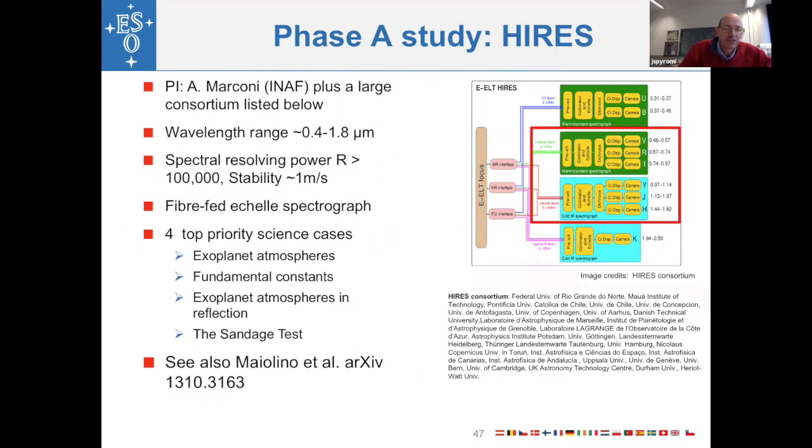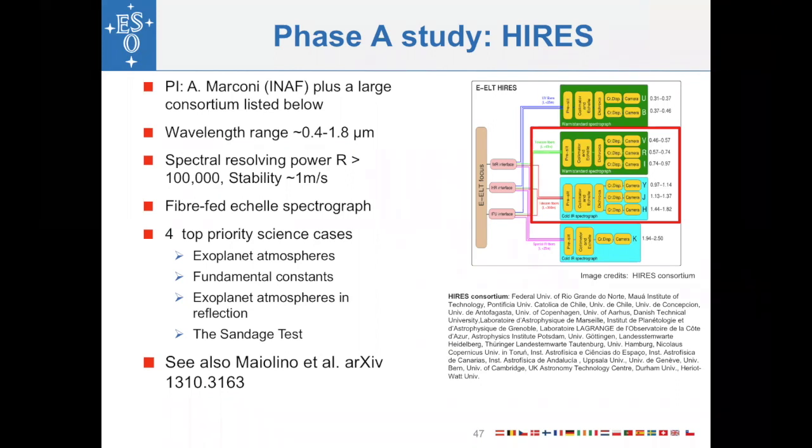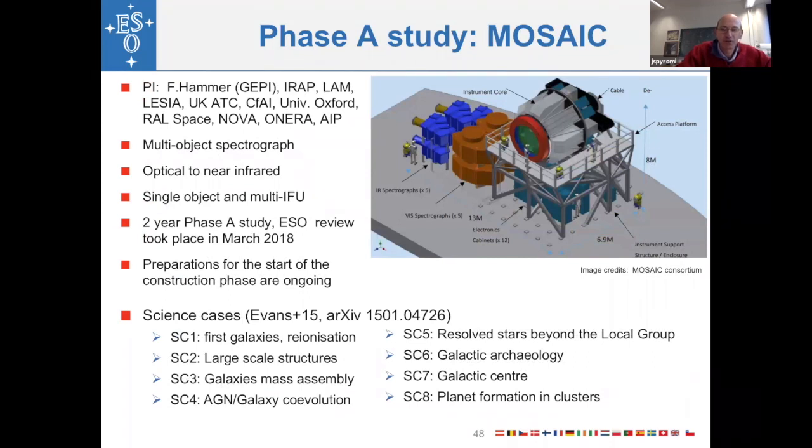So the idea here in complementarity with the JWST is that we can actually go and do very high spectral resolution for the objects that JWST is doing the imaging for. There are two design studies, HIRES, the high resolution spectrograph, which is an ESPRESSO-like instrument. ESPRESSO is a new spectrograph that we've just deployed on the VLT. But in this case, it's actually working also from the blue and in the infrared. And this is at the design stage. This is approved to be designed, but not yet for construction.